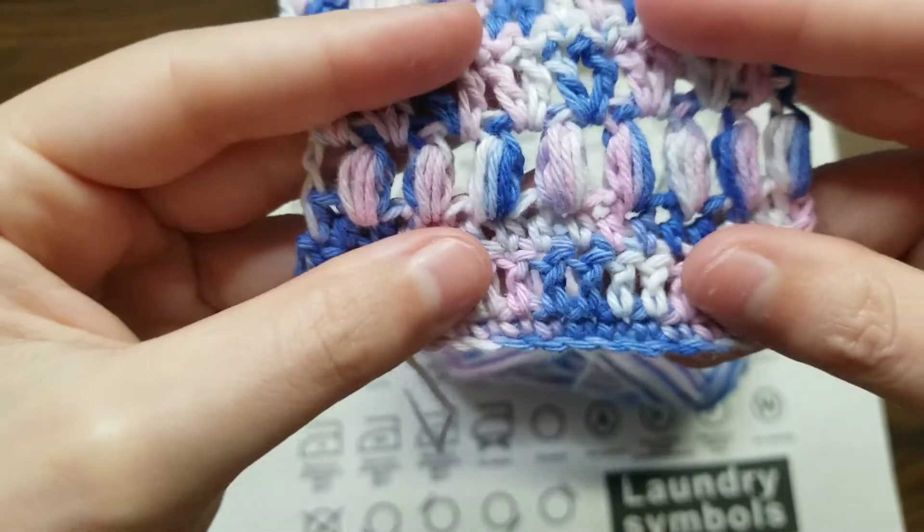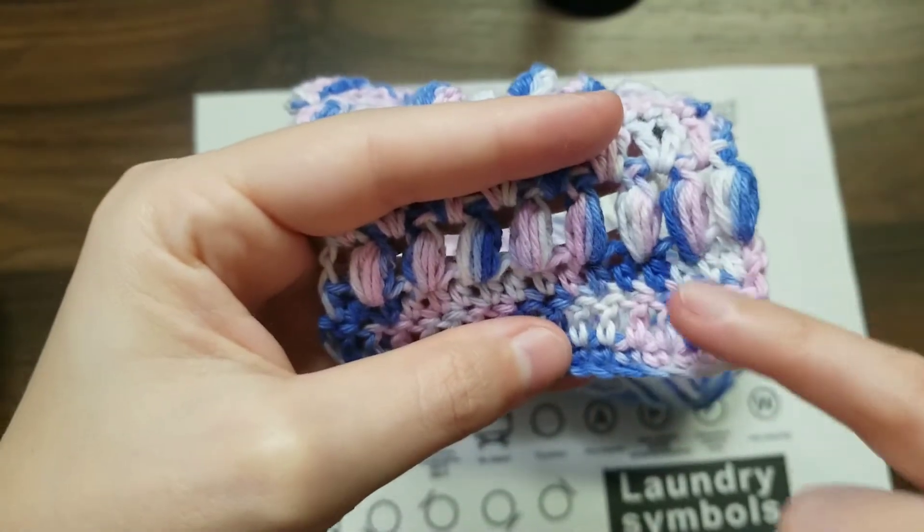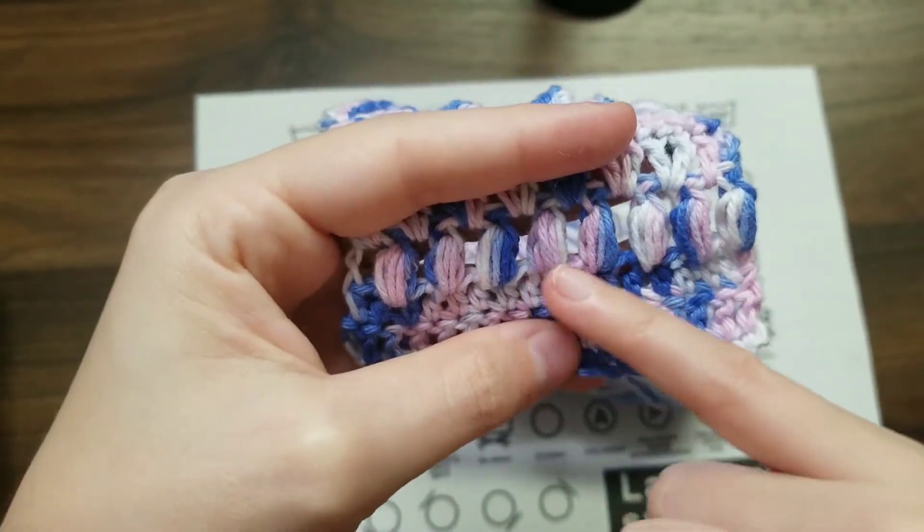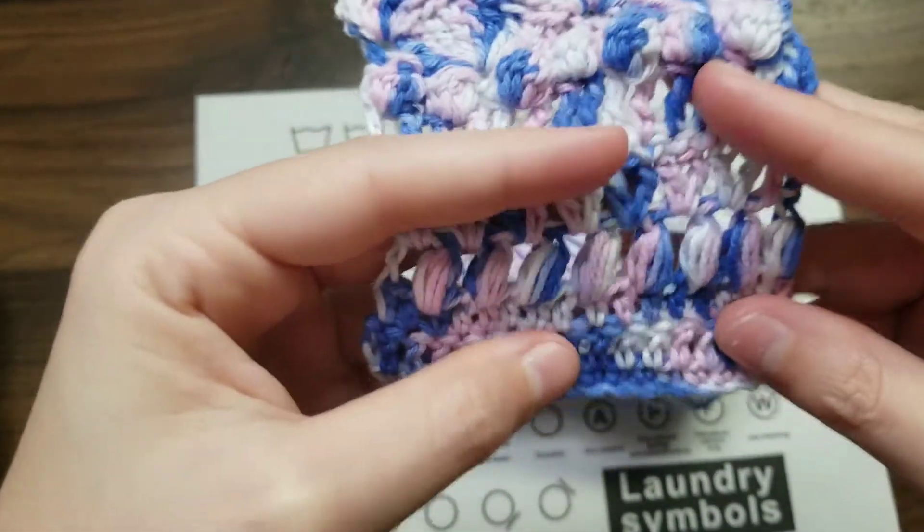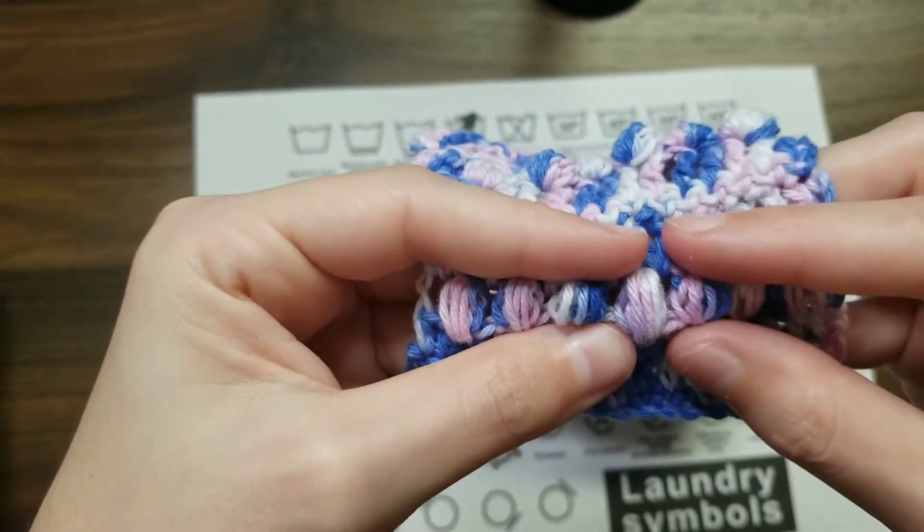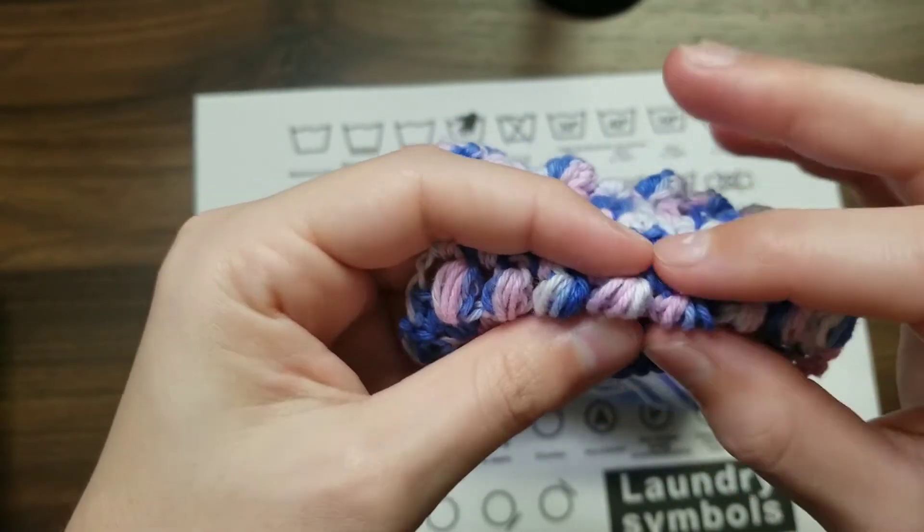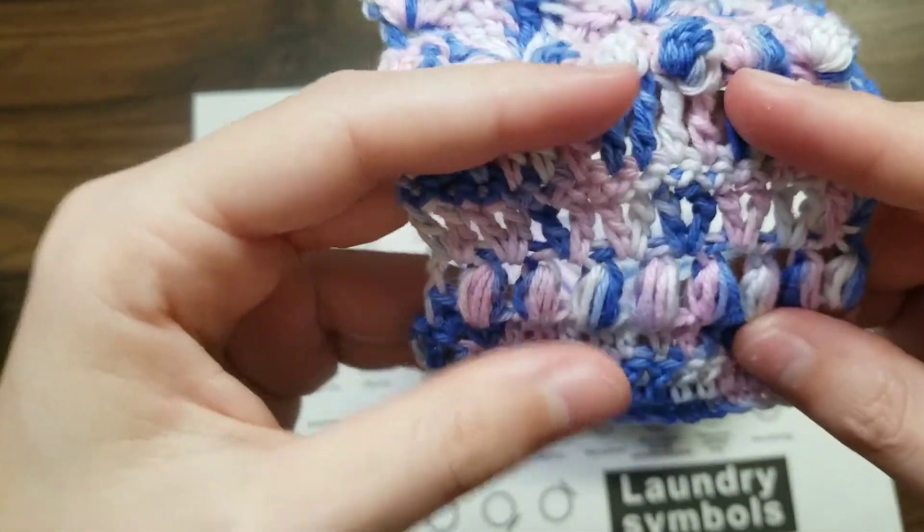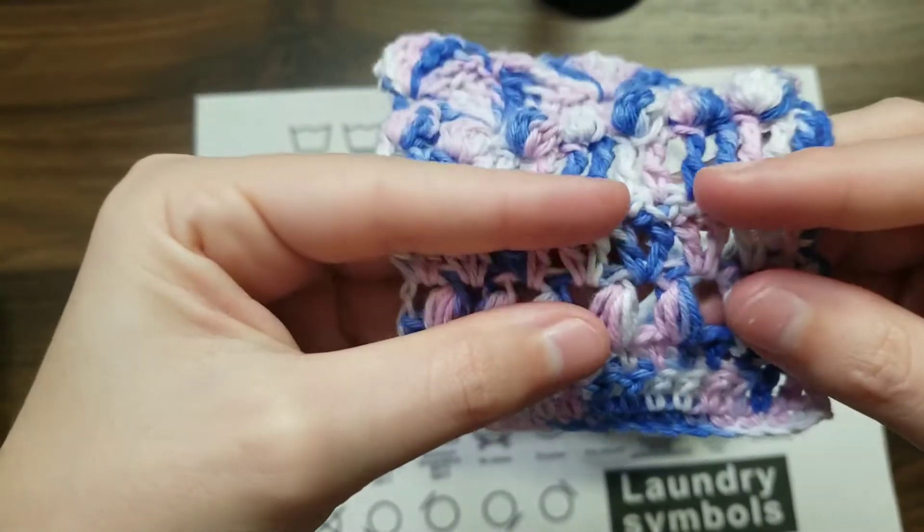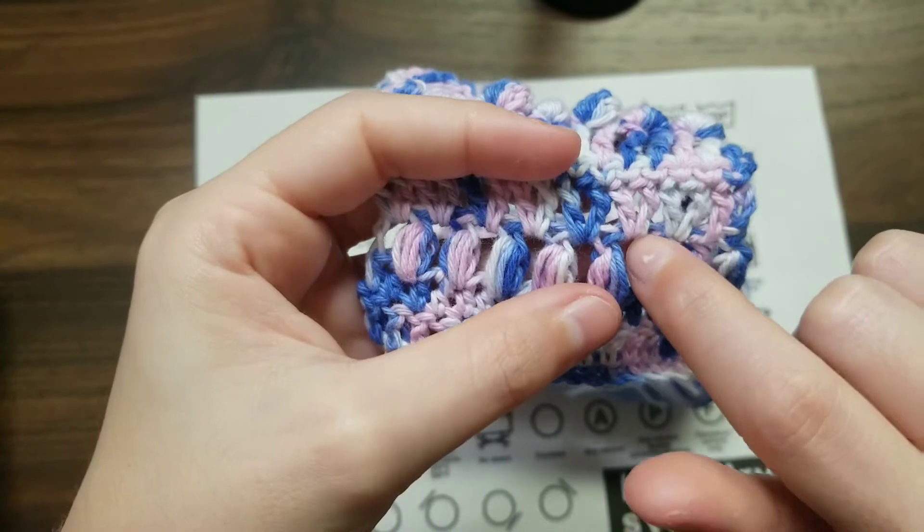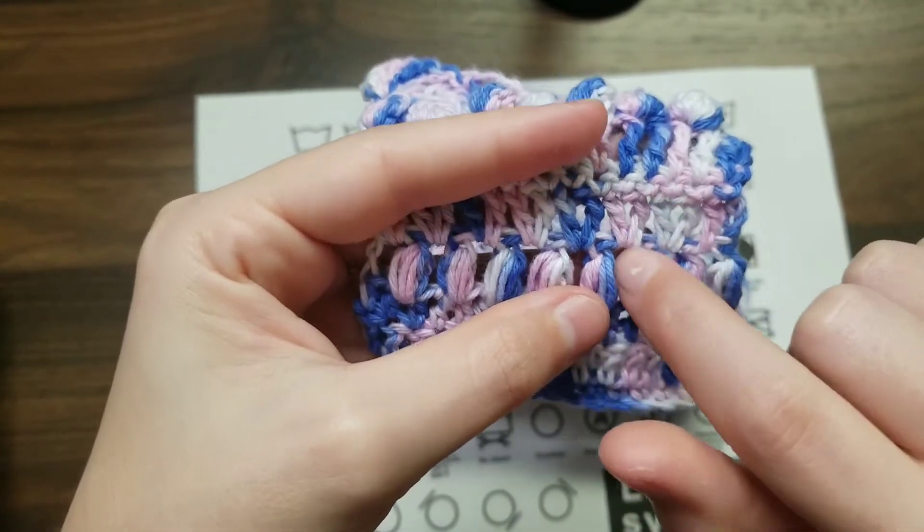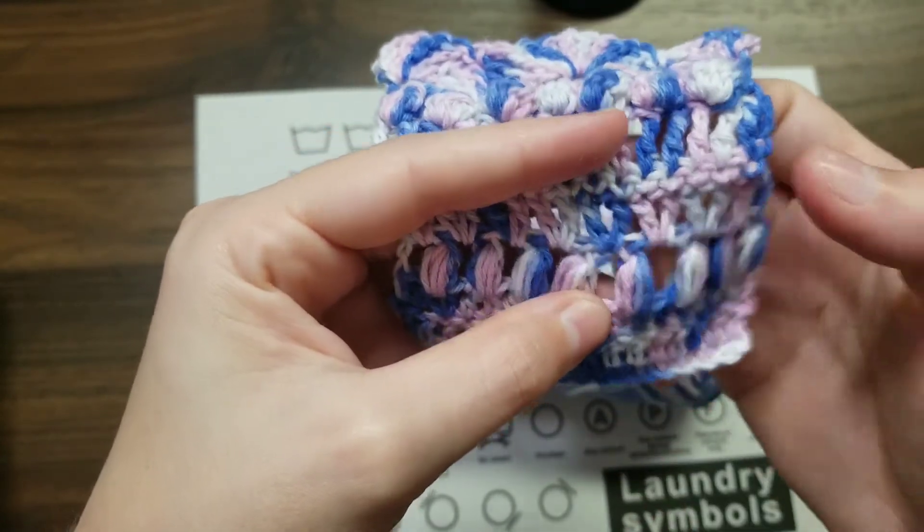And then next up we have a row of puff stitches. And I looped around four times to get this size puff so you can go bigger if you want to. But I wouldn't recommend going less unless you're going to make these puff stitches really tight. And then for the next row we did V stitches, which is just two double crochets with the space in between, in between the puff stitches spaces.